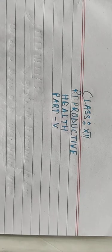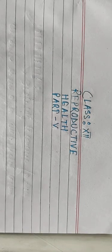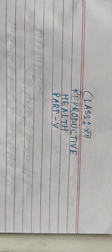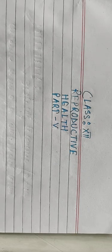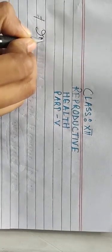Good morning students. Today we are going to discuss Part 5 of the chapter Reproductive Health from your Class 12 biology syllabus. We have already made four recorded videos on this chapter covering the meaning of reproductive health, the meaning of disease, the meaning of contraceptives, which planning and programs the government has taken for family planning, amniocentesis, and MTP. Today's topic is infertility.